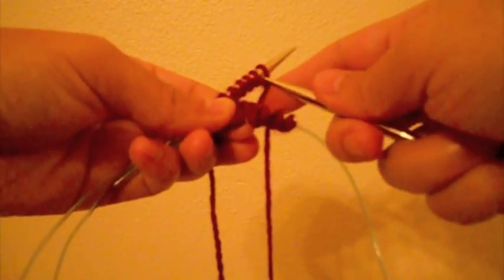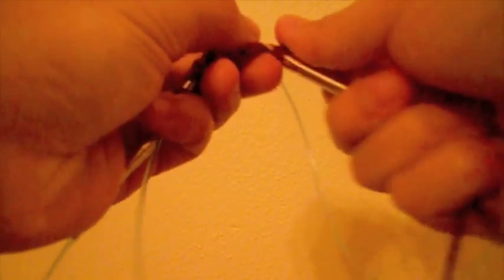Now simply join in the round by knitting into the back needle. The first stitch of each round you should knit tightly in order to avoid ladders or gaps between the stitches.